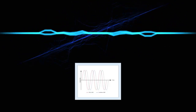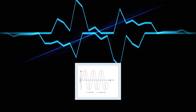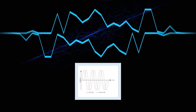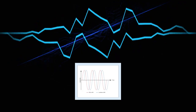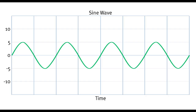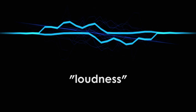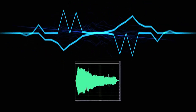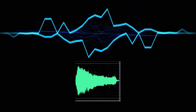All waves have the same characteristics, including the two that are important to us now: amplitude and frequency. Amplitude is the distance from the resting or zero cross point of the wave to the highest peak of the wave. This amplitude is what we perceive as a sound's loudness or volume. The bigger the amplitude, the louder the sound.